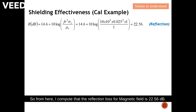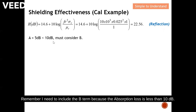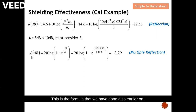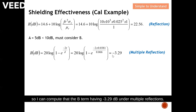Since the absorption loss is less than 10 dB, I need to include the B-term for multiple reflection. The shield thickness is 0.0381 centimeter and the skin depth is 0.066 centimeter. Using the B-term formula, I compute a multiple reflection correction of minus 3.29 dB.